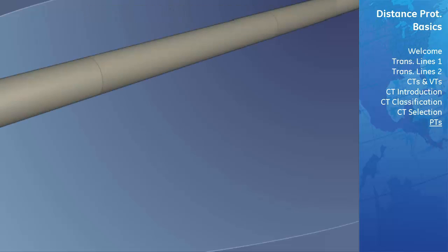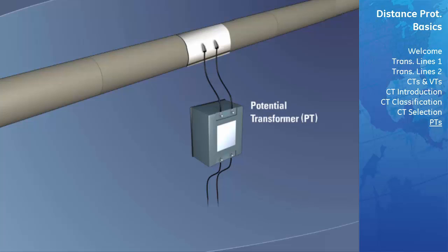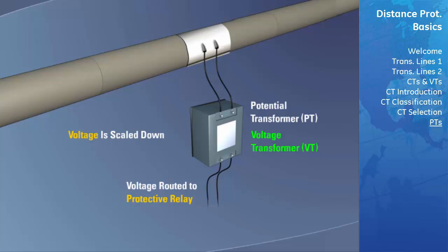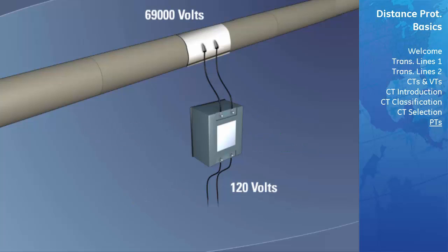The next type of transformer we will cover is the potential transformer, symbolized as PT, sometimes known as the voltage transformer, symbolized as VT. Similar to current transformers, potential transformers scale down the voltage passed through them, and the scaled-down voltage is then routed to a protective relay for measurement. A PT is classified with a conversion ratio indicating the amount the primary voltage is scaled down. For example, a ratio of 60 to 1 scales a primary voltage of 69,000 volts down to 120 volts.